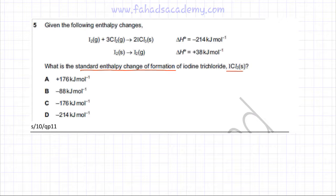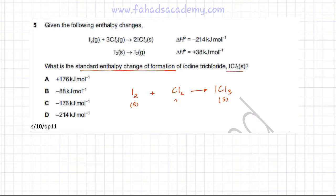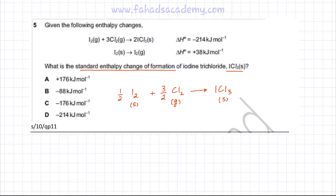The definition of the standard enthalpy change of formation is that one mole of ICl₃ solid must be produced from its constituent elements in their standard states. Iodine is a diatomic molecule and is solid at room temperature, so it should be ½I₂(s). The other element is Cl₂, which is also diatomic and gaseous at room temperature, so we need 3/2 Cl₂(g). Balancing gives: ½I₂(s) + 3/2 Cl₂(g) → ICl₃(s). This is the reaction whose enthalpy change I need to find.